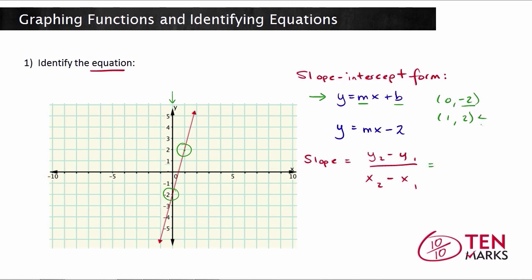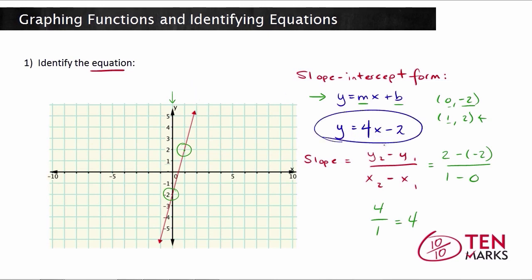Using the slope formula with the two points, we subtract 2 minus negative 2 in the numerator, and 1 minus 0 in the denominator. So 2 minus negative 2 equals 4, and 1 minus 0 equals 1, so you get 4 over 1, which equals 4. This means the slope of the line has a value of 4. Filling this into our equation, the equation that represents the line shown in the graph is y equals 4x minus 2.